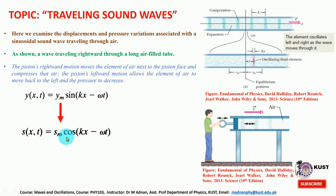The maximum displacement s_m changes periodically as cosine of x. For that, we need to consider a small fluid element — the air column of thickness delta x — as shown here.